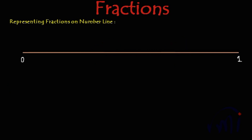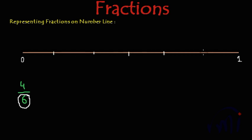Now suppose you want to represent 4 by 6 on this number line. We have to divide this line from 0 to 1 into 6 equal parts. First I'll divide it into 3 equal parts, then each part I'll divide into half. And now I'll draw bars, and below that I'll write 6.